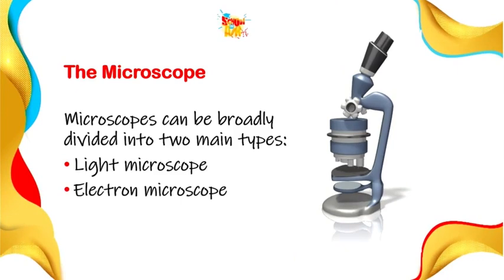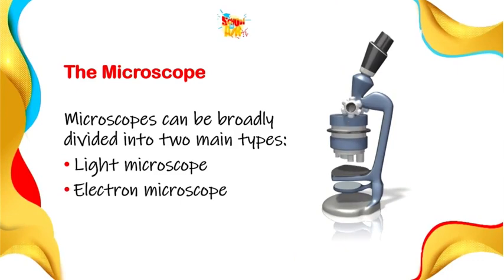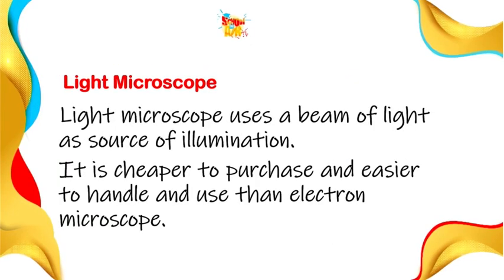Microscopes can be broadly divided into two main types: we have the light microscope and the electron microscope. The light microscope uses a beam of light as its source of illumination. It is cheaper to purchase and easier to handle and use than the electron microscope.